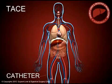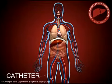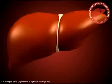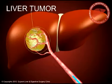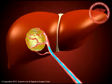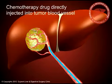A catheter is placed by a small puncture under local anesthesia in the leg, up to the blood vessels supplying the tumor in the liver. The chemotherapy drug is then directly injected into the tumor blood vessel.